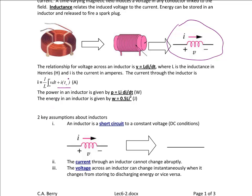Inductors store energy in the form of current, which is how you can have an initial current, and capacitors store energy in the form of voltage. To find the power of an inductor, we use the formula P equals L·I·dI/dt, derived from P equals V times I. The energy is 0.5·L·I², derived from the energy equal to the integral from 0 to T of P dt.